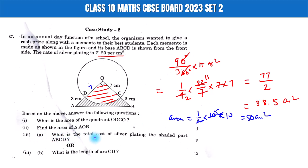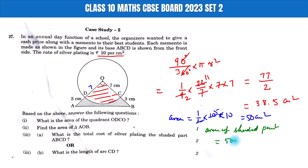Third, what is the total cost of the silver plating? The shaded part ABCD — the shaded part area equals the triangle area minus the quadrant area. The shaded part is equal to 50 minus 38.5 cm², which gives 11.5 cm². The rate is 20 rupees per cm².